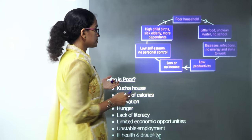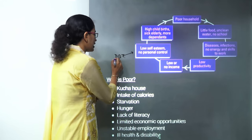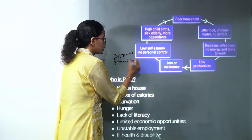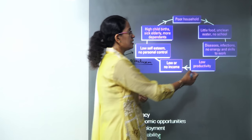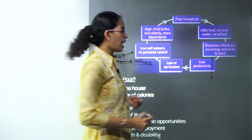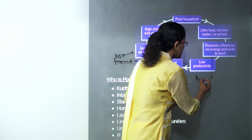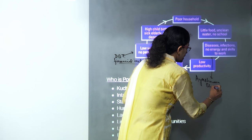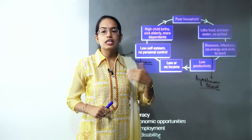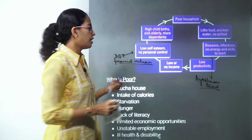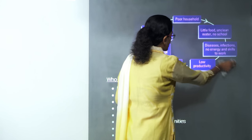The government has brought in various schemes. The Direct Benefit Transfer (DBT) scheme talks about financial inclusion, which is a very important parameter to rule out poverty in India. To address disease, the Ayushman Bharat scheme was introduced in the 2018-19 budget, providing basic or universal healthcare for BPL families. These are some of the efforts made by the government to address poverty.